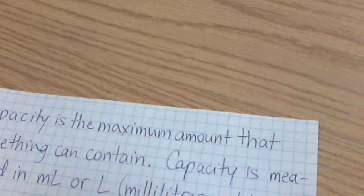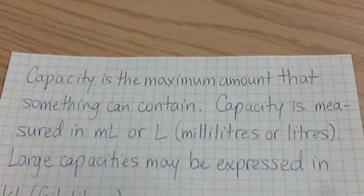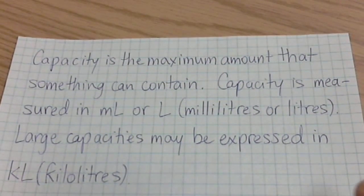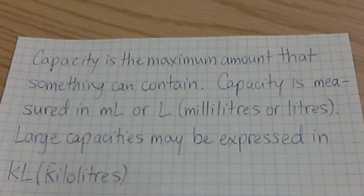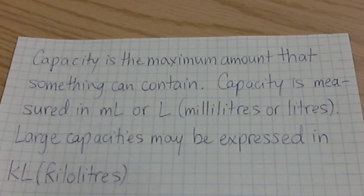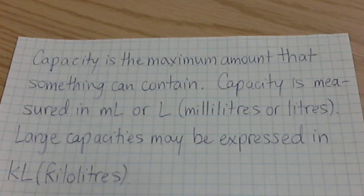The second definition is capacity. Capacity is the maximum amount that something can contain. Capacity gets measured in milliliters or liters, and large capacities can be expressed in kiloliters. For example, when you buy a bottle of pop from the store, it's typically measured in liters — like two liters of pop or one liter.